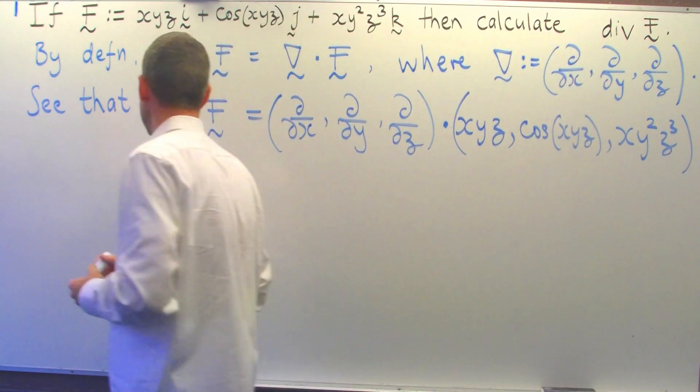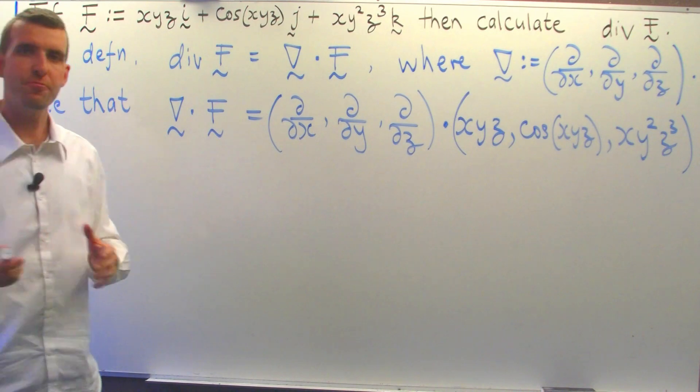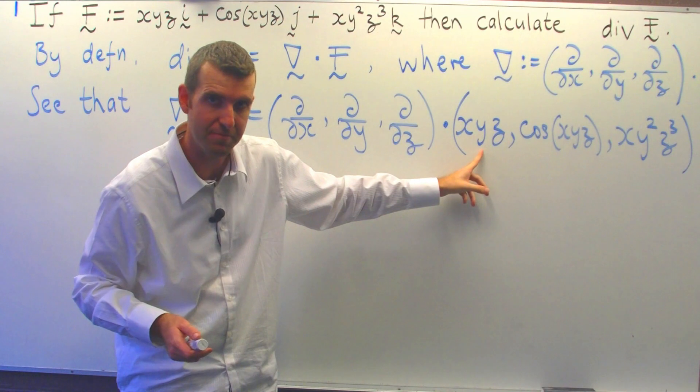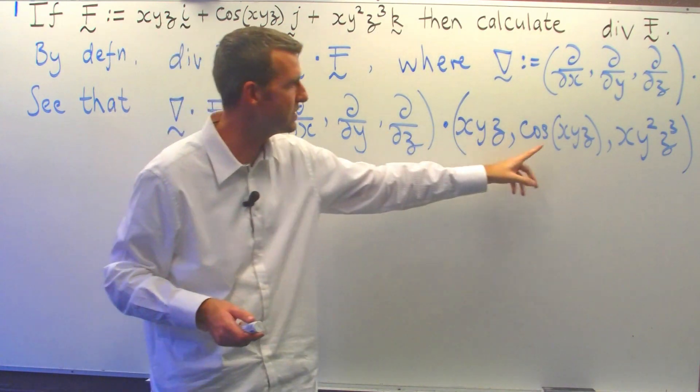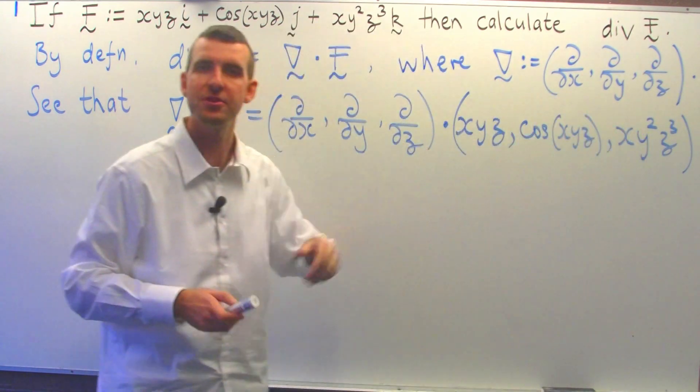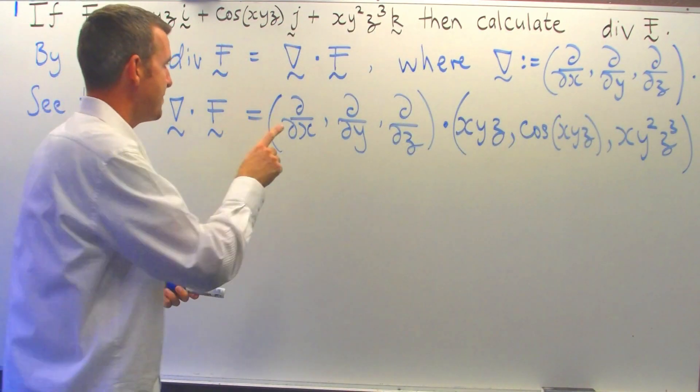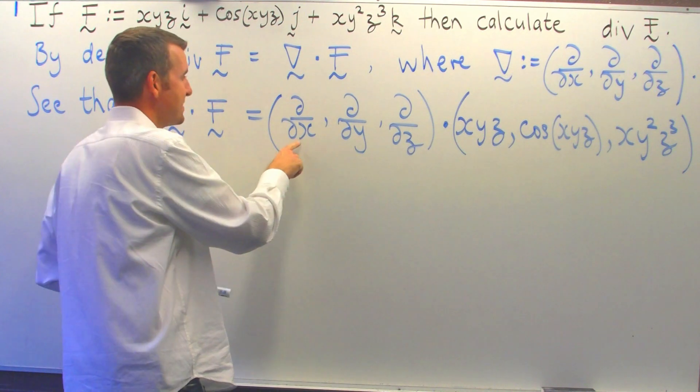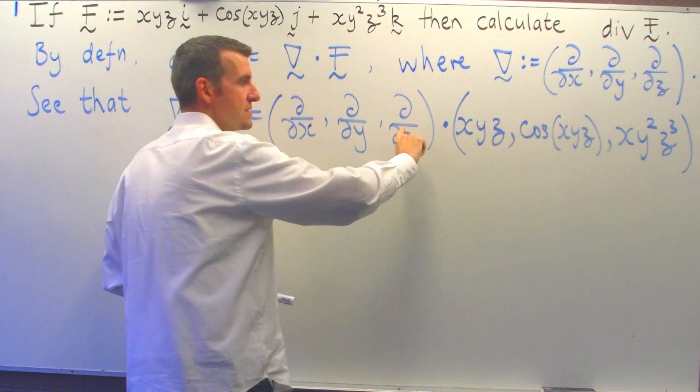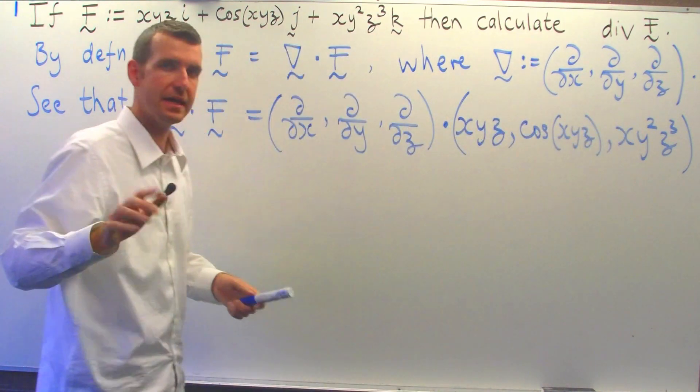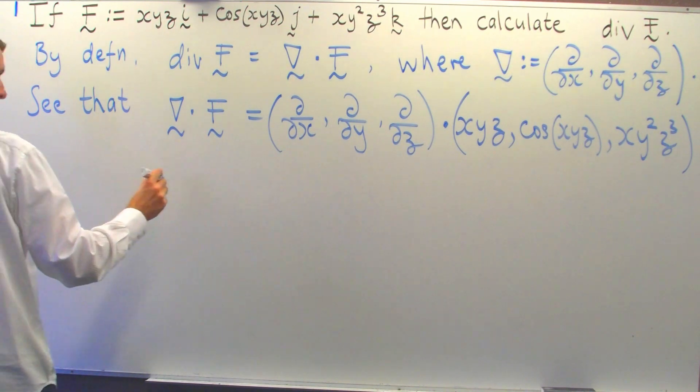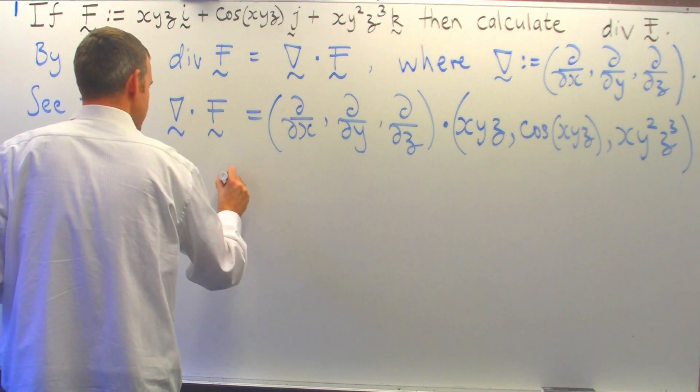Now remember with the dot product, the first component will multiply by the first component over here. The second component multiplies by the second component. The third component multiplies by the third component, and you add up all the bits. But remember, we're not really multiplying here. These are operating on the corresponding components. So, if we expand this dot product, we'll get something like the following.